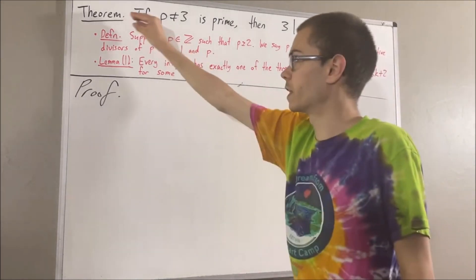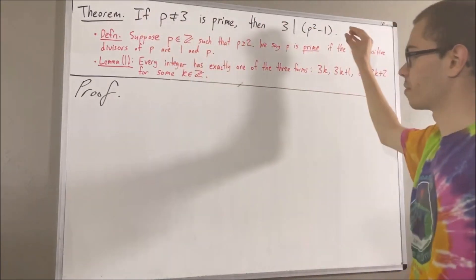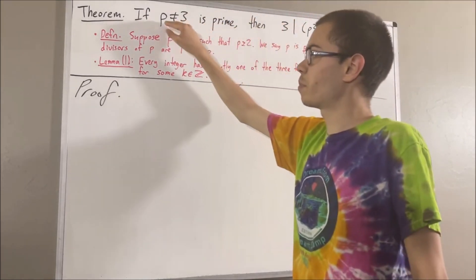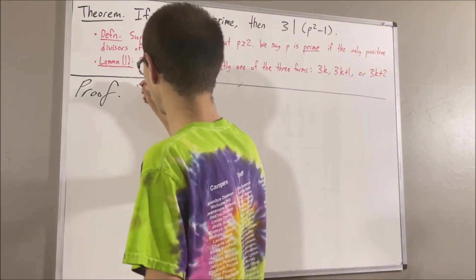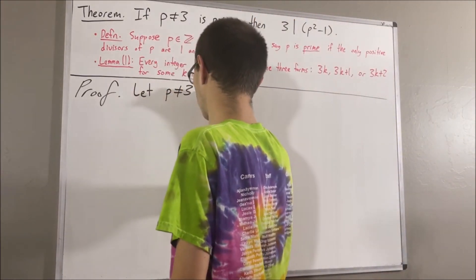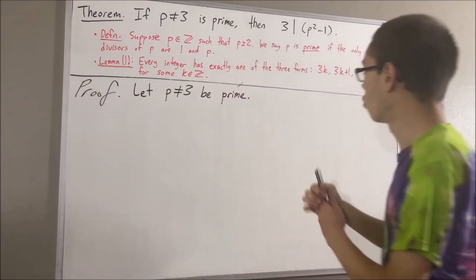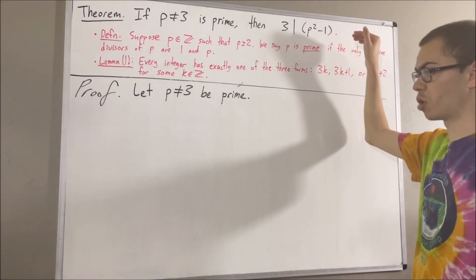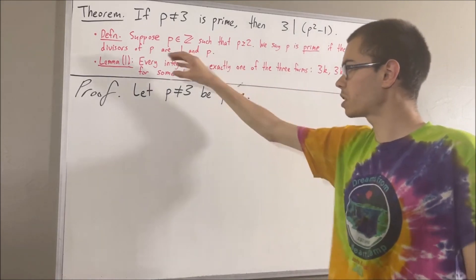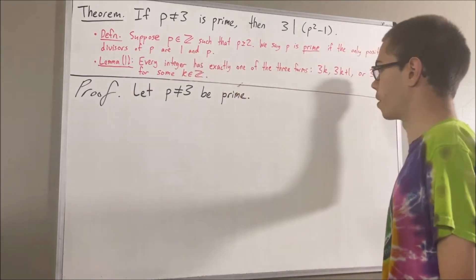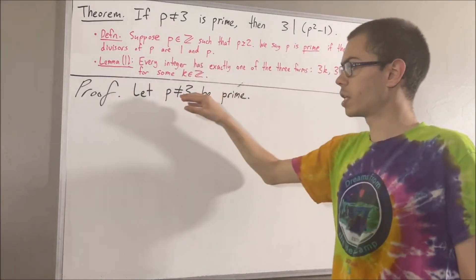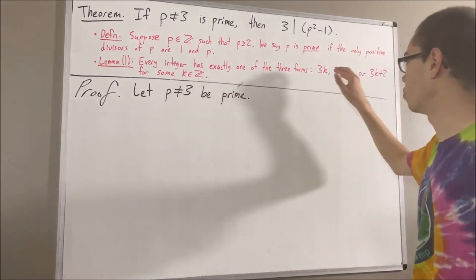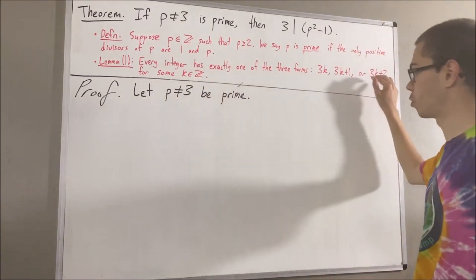Now let's get into proving this theorem. To start out, let's give ourselves a prime number p not equal to 3. From here, we want to show that 3 is a divisor of p squared minus 1. Let's first apply Lemma 1. We know that since p is an integer, p has exactly one of these three forms.